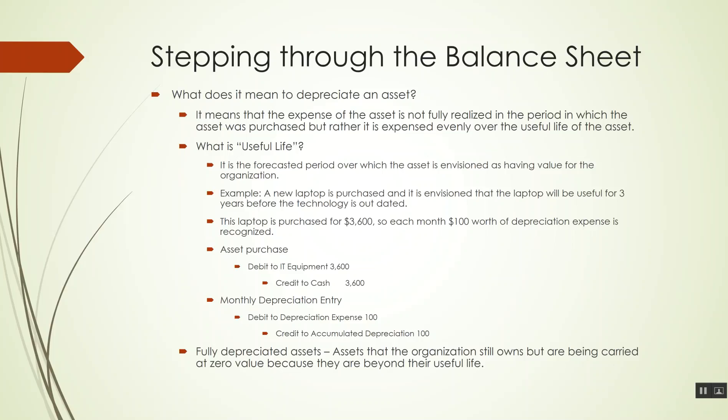Let's take a look at the bookkeeping that transpires. When we purchase the asset, as we can see here, we make a debit to our IT equipment for $3,600 and an offsetting credit to our cash for $3,600. So we're increasing the fixed assets on the books — a debit to an asset increases its value — while we're crediting our cash, which draws its balance down. That's the bookkeeping that transpires when we buy it.